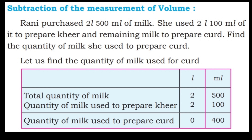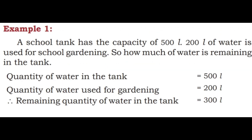Let us see the next example. A school tank has a capacity of 500 ml. 200 ml of water is used for school gardening. How much water is remaining in the tank? Quantity of water in the tank is equal to 500 ml. Quantity of water used for gardening is equal to 200 ml. Therefore, remaining quantity of water: 0 minus 0 is 0, 0 minus 0 is 0, 5 minus 2 is 3. Answer: 300 ml.